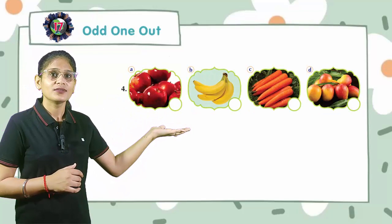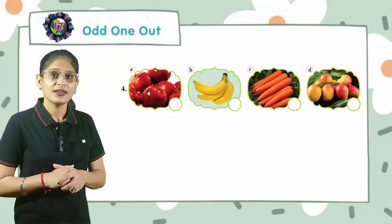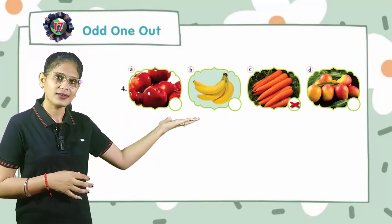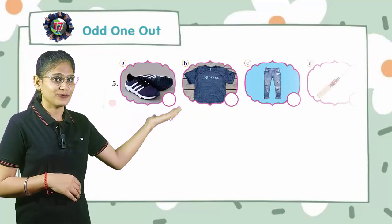Now come to the fourth. Here we have fruits and in part C we have carrots that are vegetables, so cross out at C.